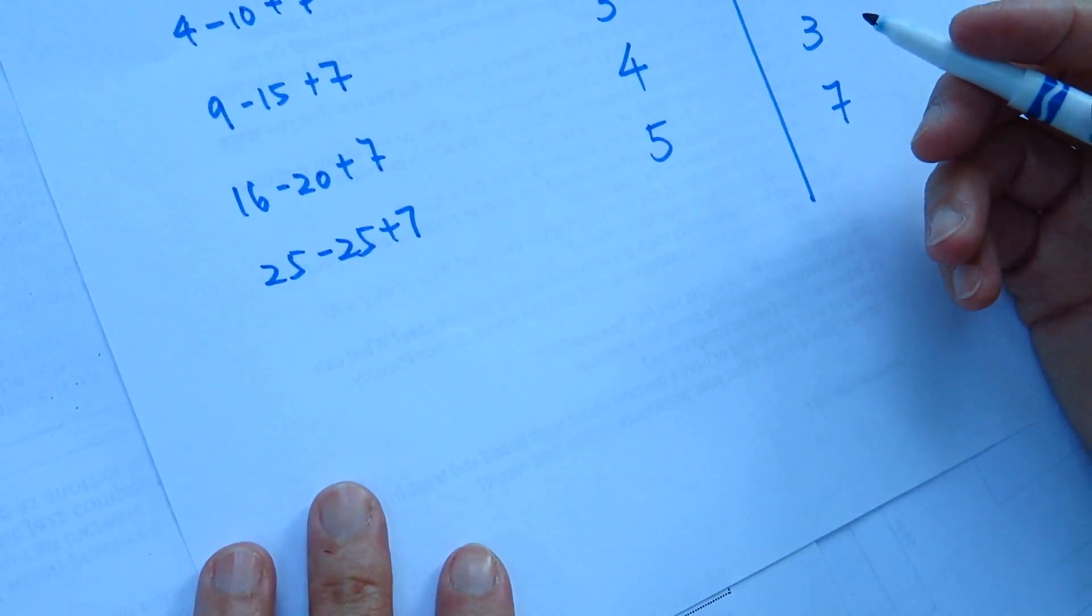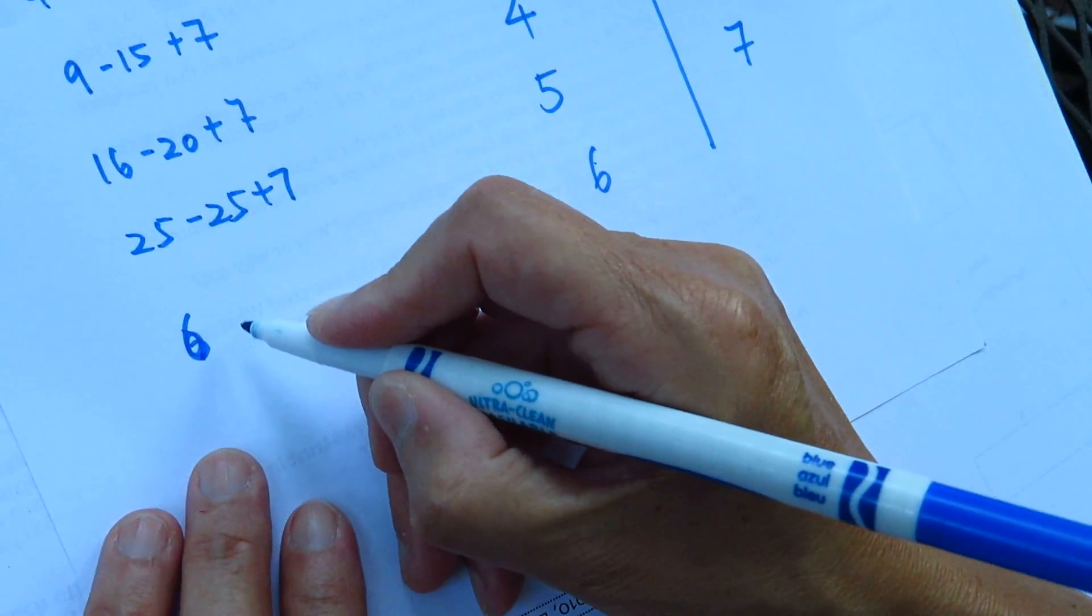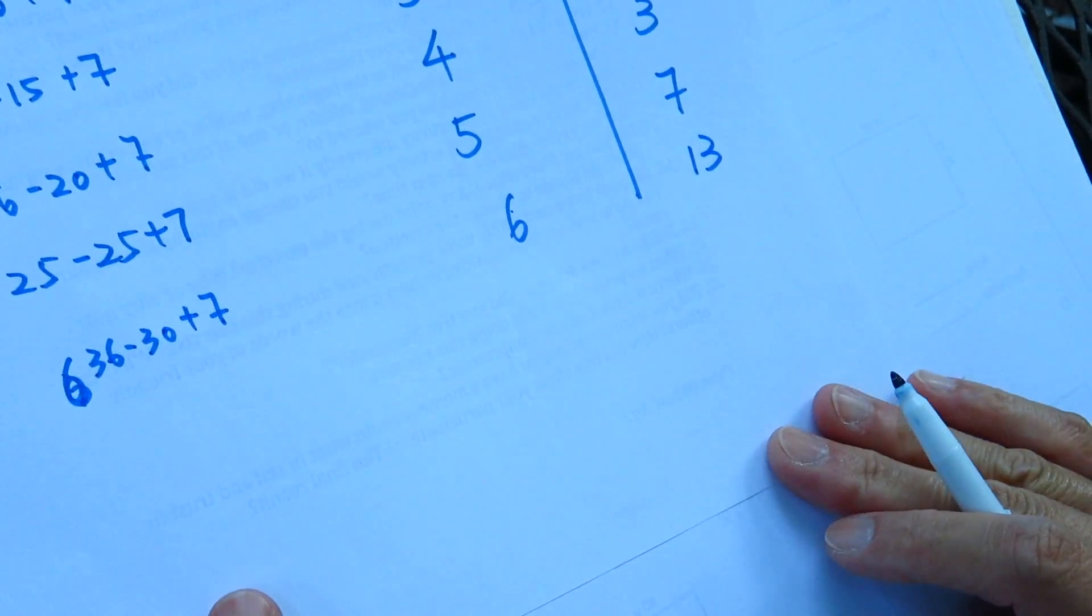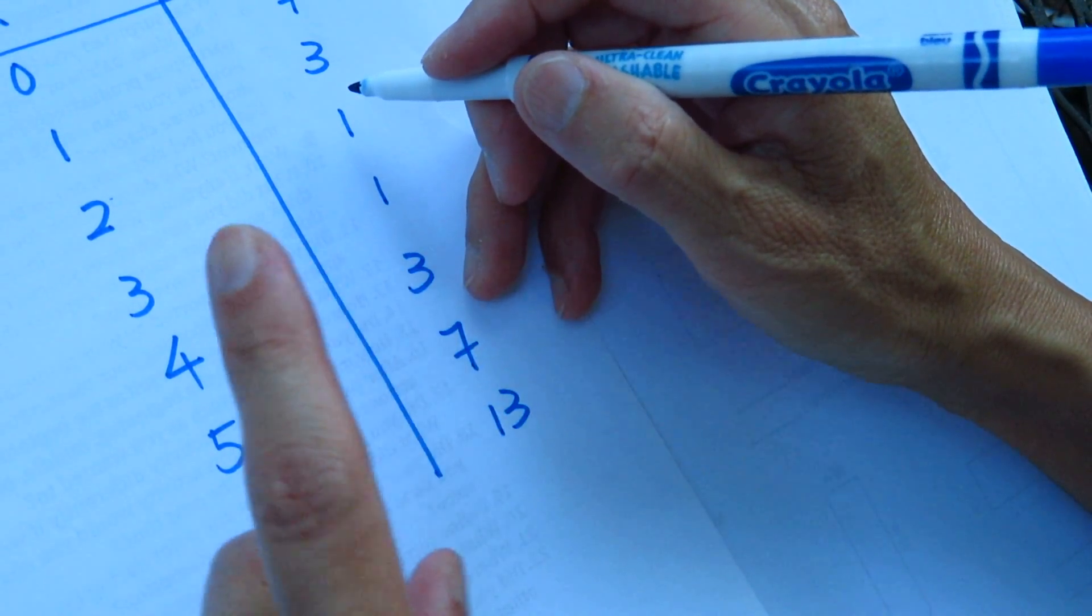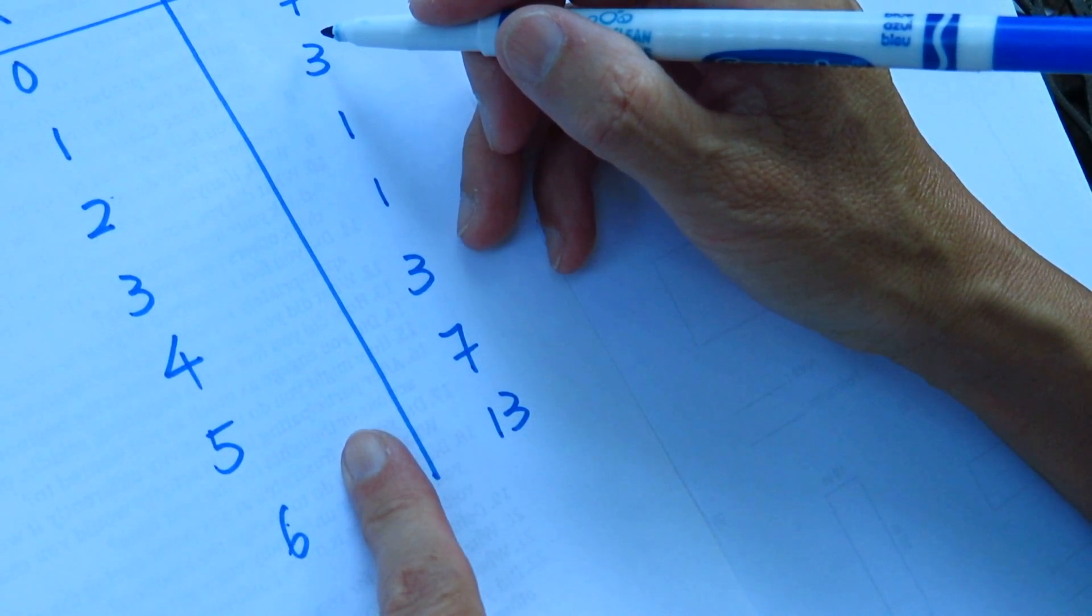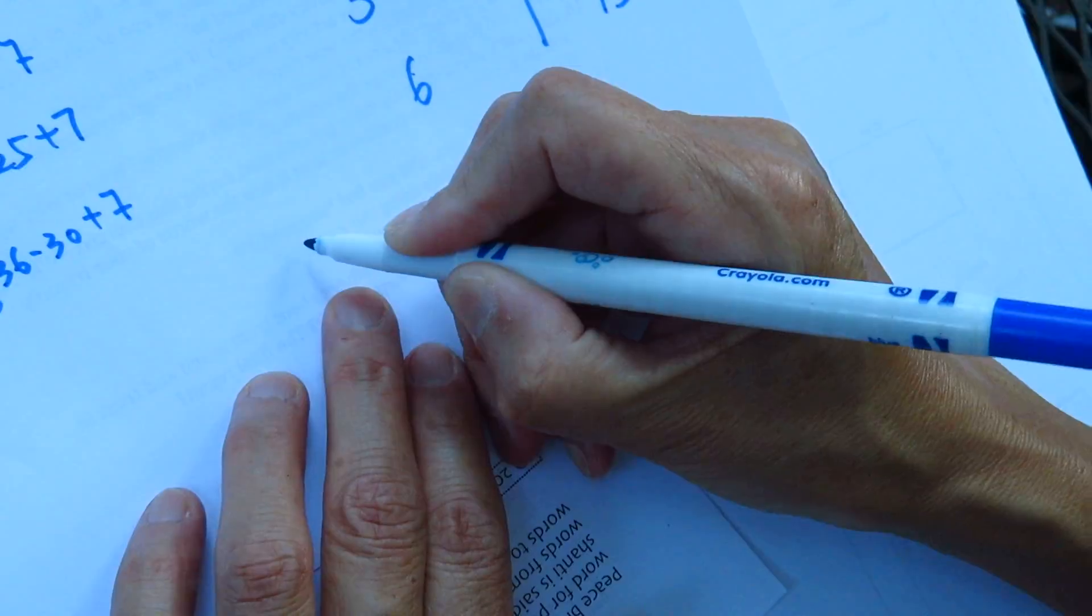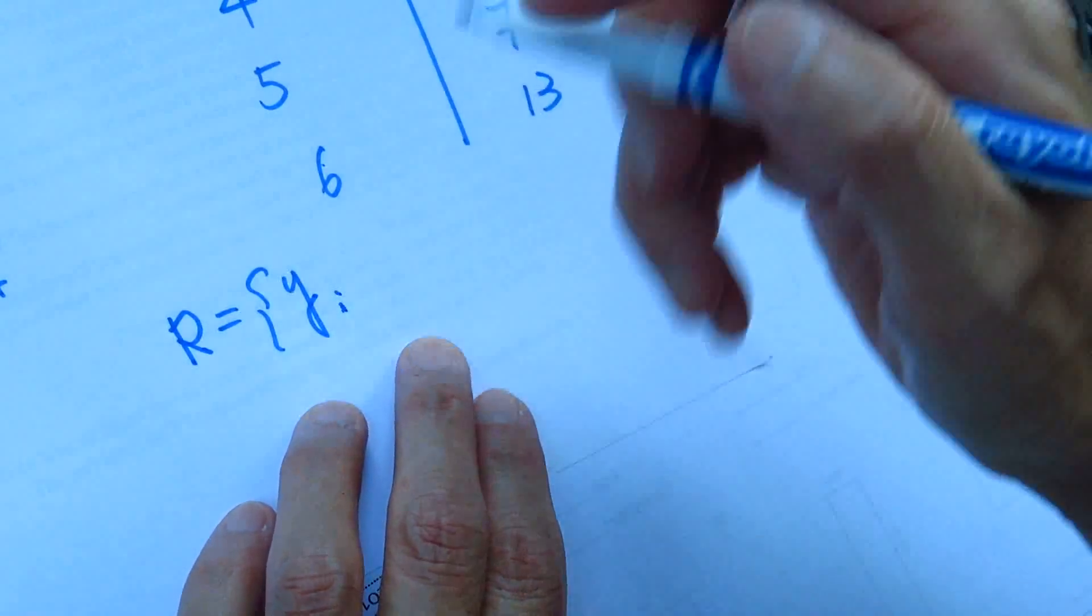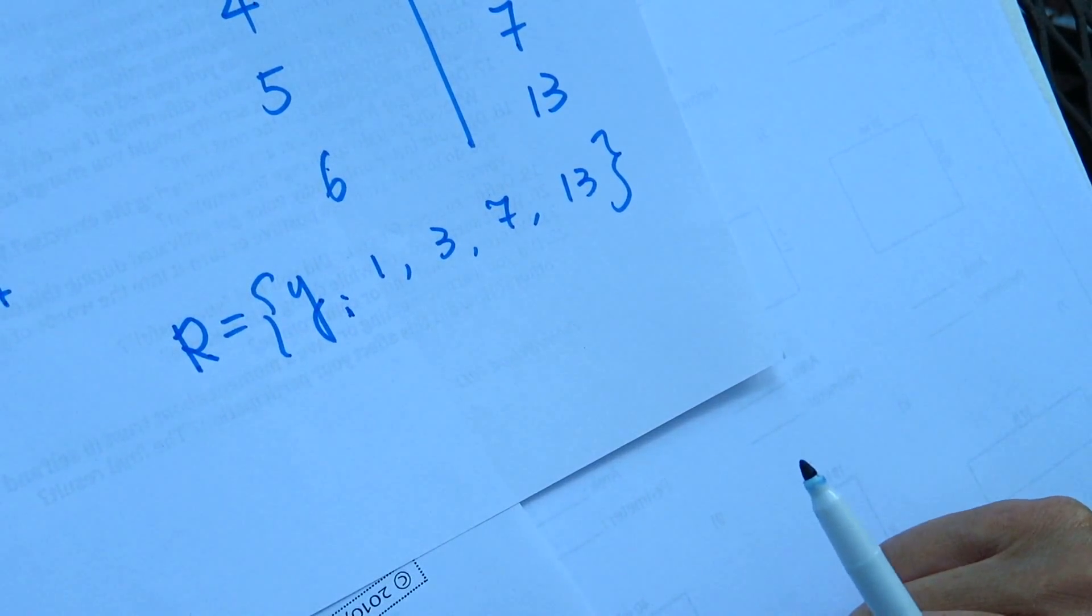So the range of y are these numbers precise. So 1 used two times but still it's 1. However many times it has been used, it is 1. 3 used two times but it's 3. 7 used two times but it's still 7. You use it three thousand times, still 7 is 7, right? So the range is y: 1, 3, 7, 13. That's the domain of this problem.